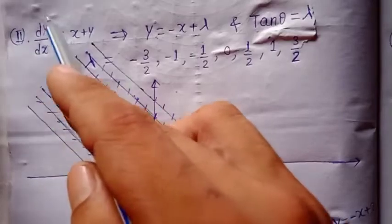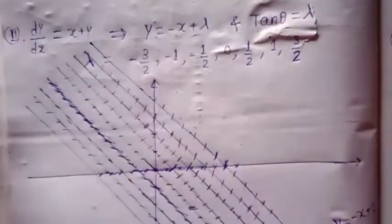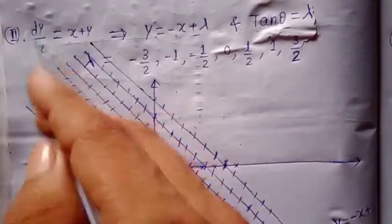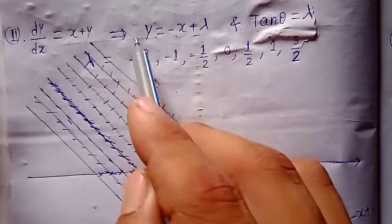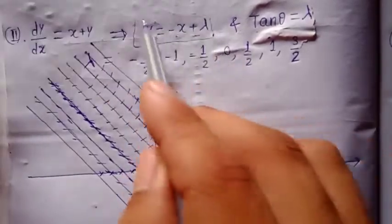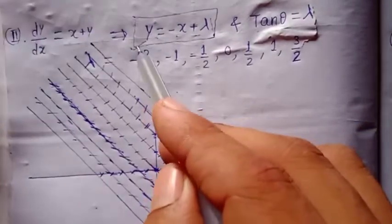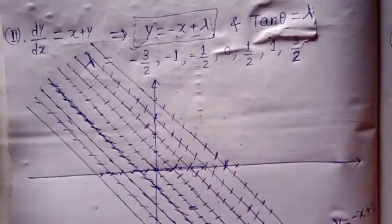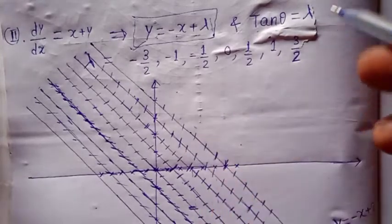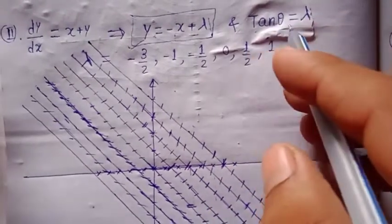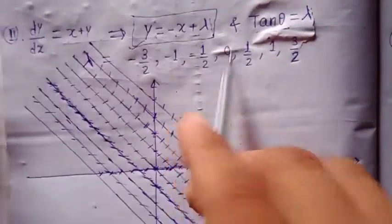The strategy is the same and common to all questions. We put some arbitrary values for dy/dx and let this be lambda. We get the isocline curve y is equal to minus x plus lambda. These curves are lines inclined at an angle of 135 degrees with the positive x-axis, and tan(theta) is equal to lambda. Let us put lambda equal to zero first.